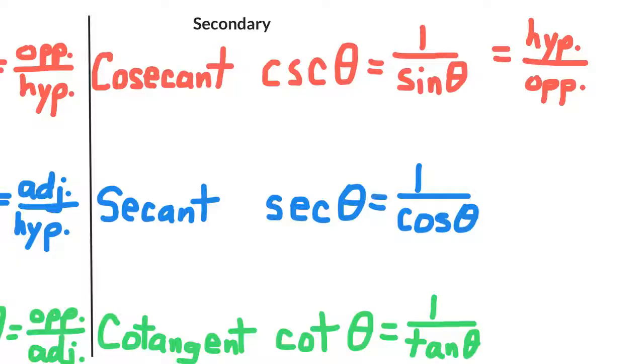The secant is the reciprocal of cosine, so that means it's the hypotenuse over the adjacent.